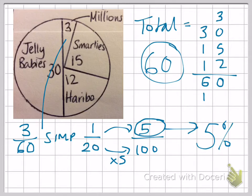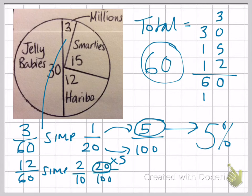Let's move on to the Haribo. We've got 12 over 60, 12 out of the 60. Again, I can't change that into 100 straight away by multiplying, so I'll simplify first of all. If I divide by 6, I can get 2 over 10, and then I can multiply that by 10 to give me 20 over 100. The top number becomes 20%.